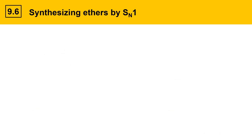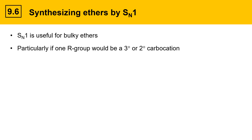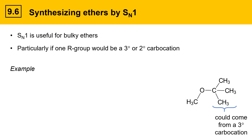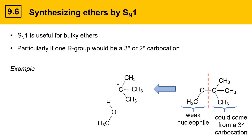Ethers can also be synthesized by SN1 and SN2. SN1 is useful for making bulky ethers, particularly if one of the R groups would be a tertiary or secondary carbocation, because these are good, stable carbocations. Here's an example with an ether that has one of its R groups being very bulky. This could come from a tertiary carbocation. Thinking backwards, the left side of the molecule could be our weak nucleophile — methanol — and the tertiary carbocation could come from a tertiary alkyl halide. Thinking backwards like this is a useful way to solve these kinds of problems.